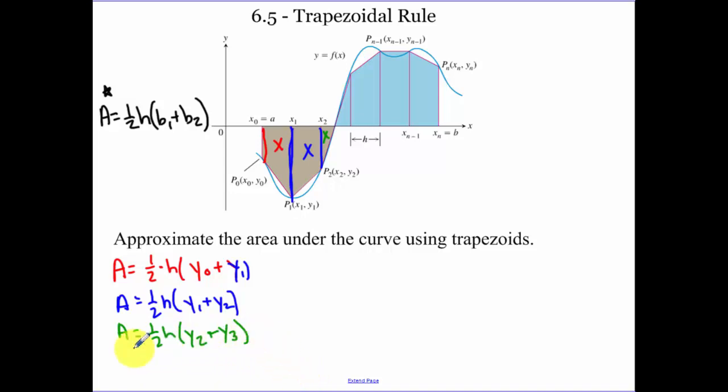And so on and so forth all the way until you get to our last one, which is area is 1/2 our height. Our last one is y sub n minus 1, meaning this height here, one less than whatever our ending point was, plus y sub n. I have to add all these areas up together.